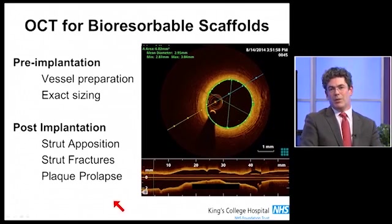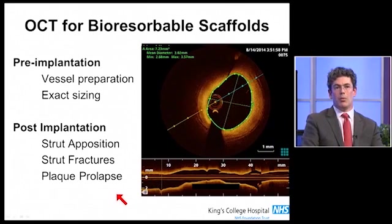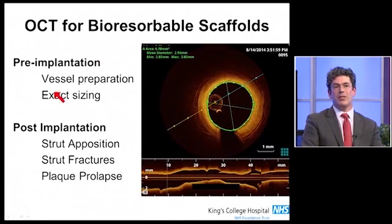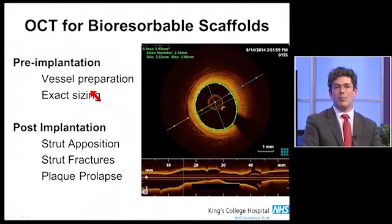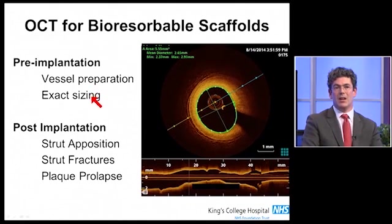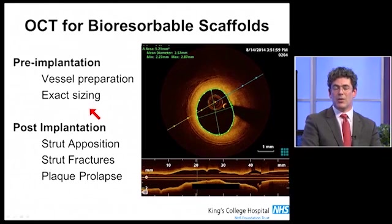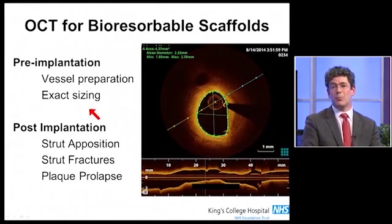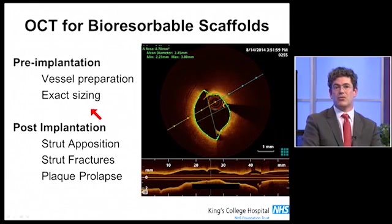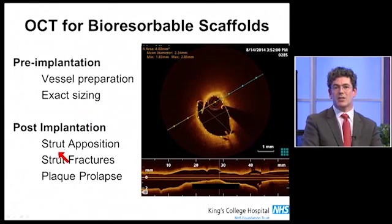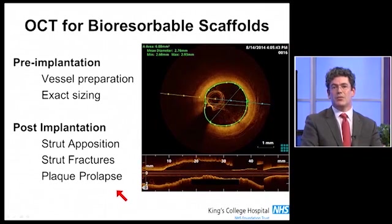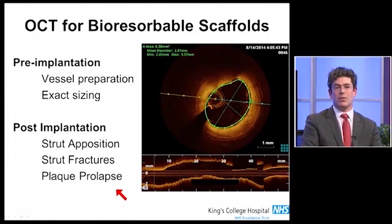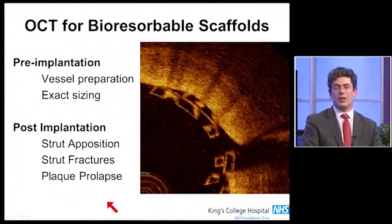We've been using this for almost all of our bioresorbable cases. These principles are even more important for BVS — pre-implantation vessel preparation can be guided exactly by OCT, and the sizing has to be even more precise. Remember that a malapposed thick strut is potentially more of a problem than a malapposed thin strut. Post-implantation, the level of detail you get is exquisite — you cannot get this with another modality. You can clearly see the situation with strut overlap.